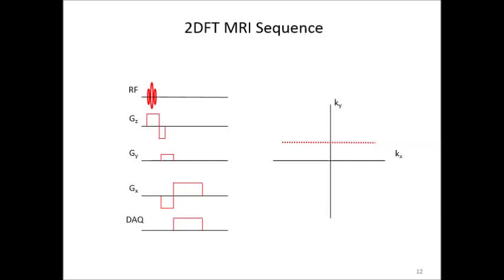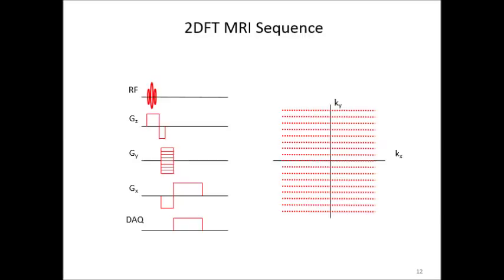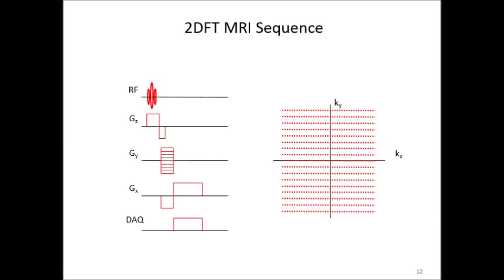We then repeat this entire procedure for many different gy, collecting many different lines. This is samples in the frequency domain, and we can recover our original image simply by performing an inverse 2D discrete Fourier transform. Thank you for your attention.